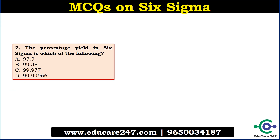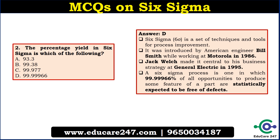The next question is: the percentage yield in 6 Sigma is which of the following? The answer is D — 99.99966%. Six Sigma is a set of techniques and tools for process improvement. It was first introduced by Bill Smith while working at Motorola in 1986, and later General Electric applied it as a business strategy in 1995. It can reduce defects up to 99.99966% with the help of different statistical methodologies.